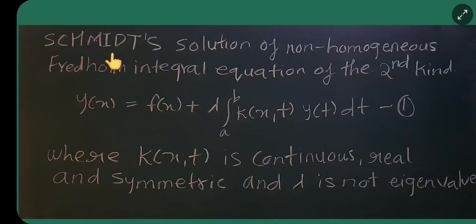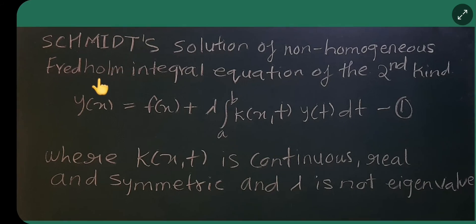Schmidt's solution of non-homogeneous Fredholm integral equation of the second kind. We are doing this. y of x is equal to f of x plus lambda integral from a to b k of x, t y of t dt.